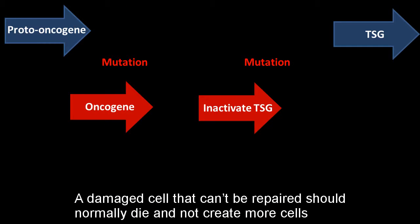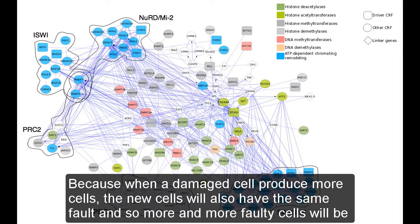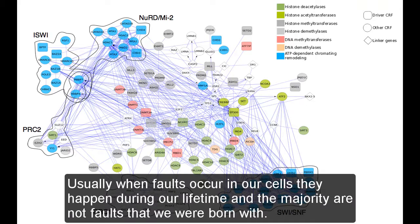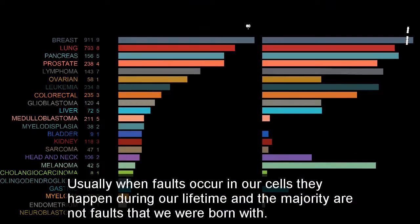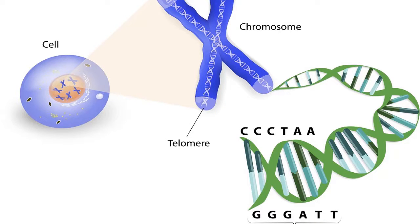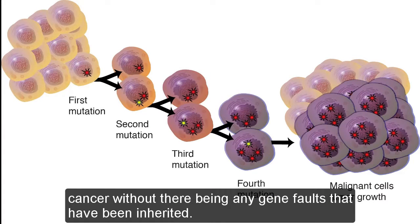A damaged cell that can be repaired should normally die and not create more cells. Because when a damaged cell produces more cells, the new cells will also have the same fault, and so more and more faulty cells will be created, bundled together, and then they can develop into cancer. Usually when faults occur in our cells they happen during our lifetime, and the majority are not faults that we were born with. Therefore, faults in our genes that develop into cancer are in most cases not inherited from our parents. It's easy to think that cancer is inherited if many people in the same family get cancer, but we must remember that cancer is such a common disease that it is normal for several people within the same family to develop cancer without there being any gene faults that have been inherited.